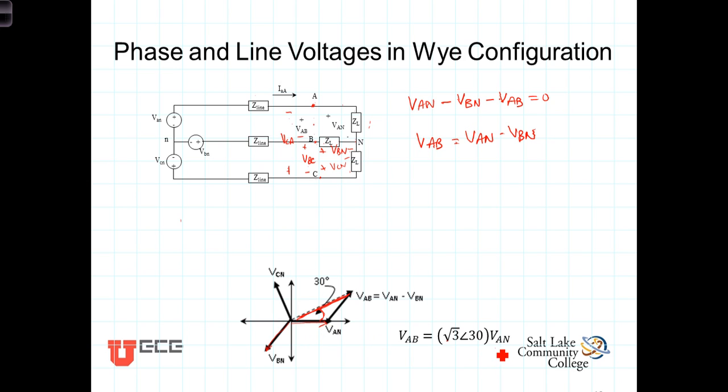we say that if you've got VAN, you can multiply VAN by the square root of three, angle 30, to give you VAB.